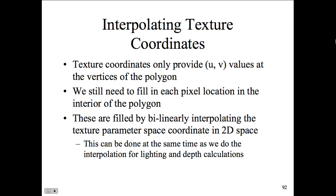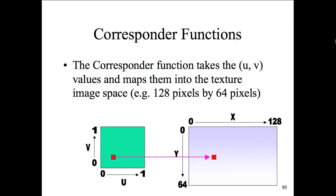Interpolating texture coordinates: texture coordinates only provide UV values at the vertices of the polygon. We still need to fill in each pixel location in the interior of the polygons — which is what the mapping does, taking the image and filling up the entire polygon. They're filled by bilinearly interpolating the texture parameter coordinates to the 2D space. If you make your polygons match the shape of your image, you'll get a much more realistic texture map. For example, rectangular polygons for a hardwood floor matching the board shapes gives a more realistic mapping. All of this — lighting, depth calculations, texture mapping — is done simultaneously, not in phases, which makes the rendering process a challenge.